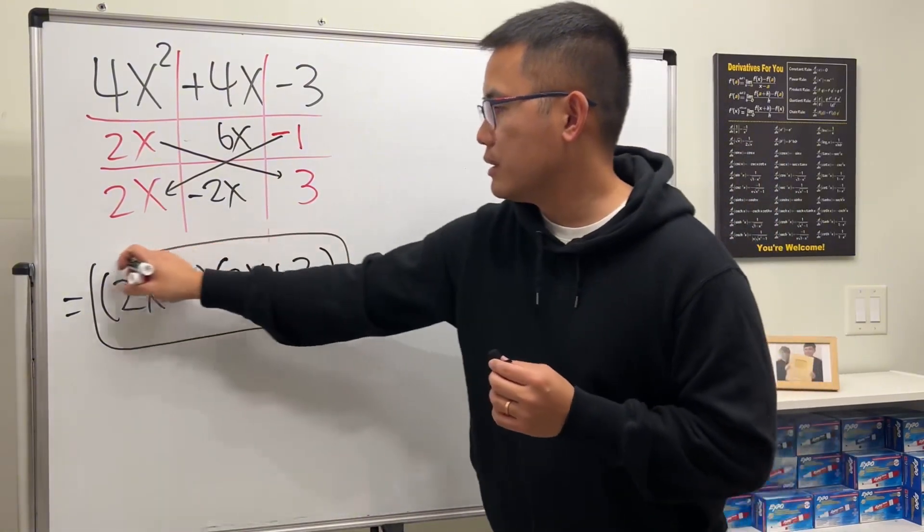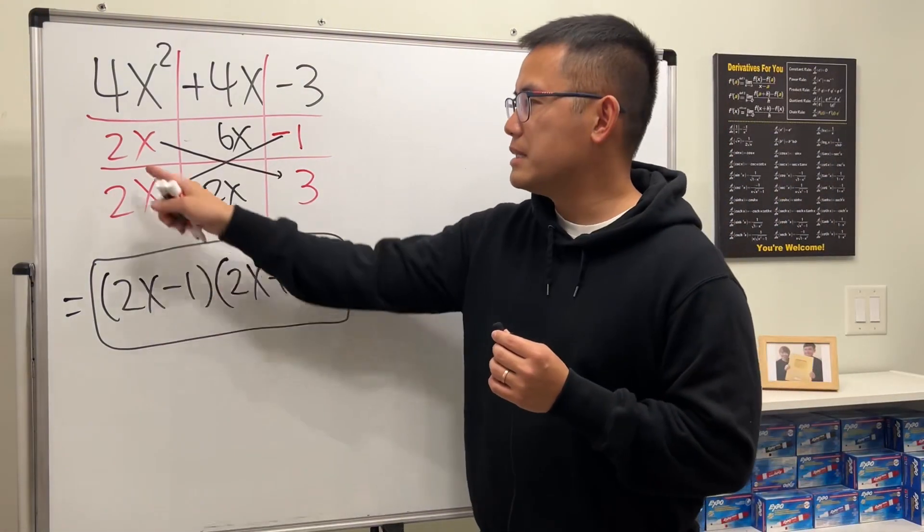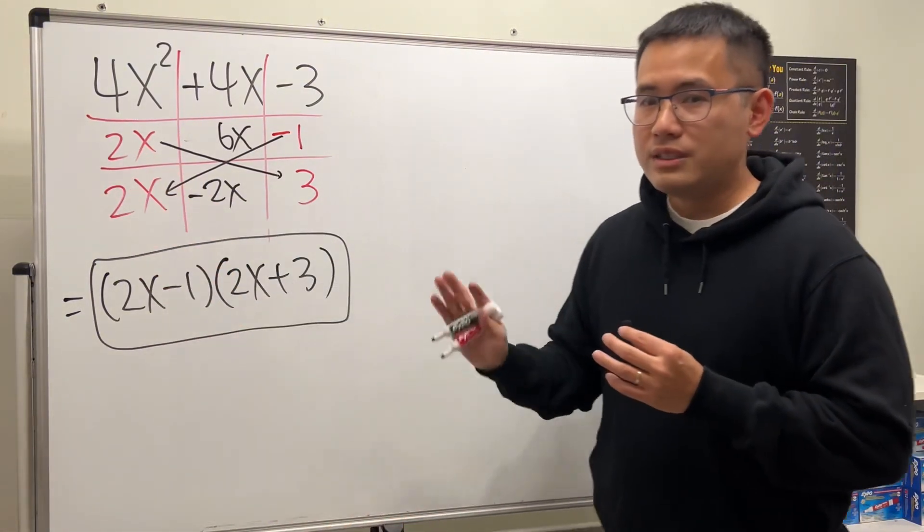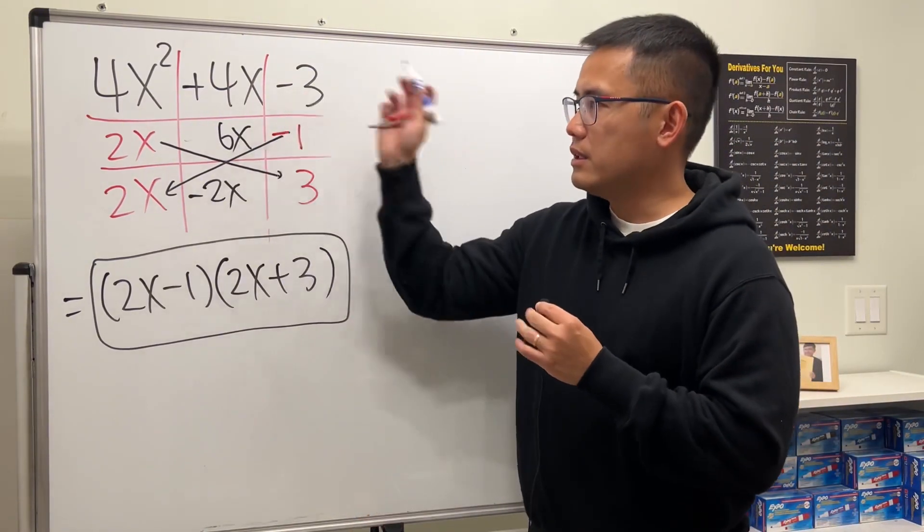If you get it wrong, just kind of fix it. Sometimes maybe you have to fix this and that. So seriously, just give it a try. If a quadratic expression is factorable, then you can always use the tic-tac-toe method to do it.